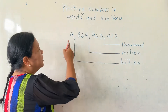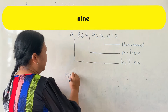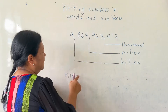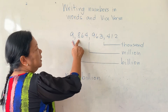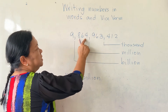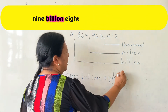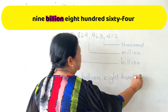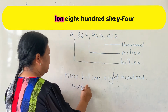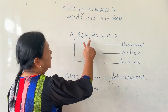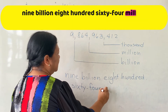So, to read this number, we will say nine. And you will see the comma, so you will say nine billion. And then you will have three digits here, so you will say eight hundred sixty four. And then again, you will see the second comma, so you will say million.